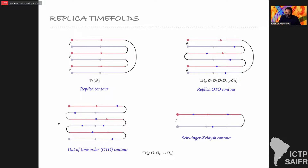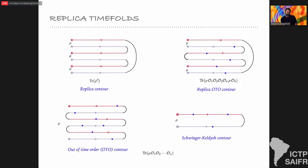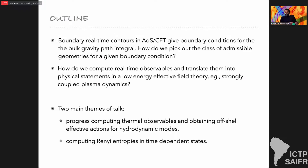Over the years we've come to appreciate that the world of contours we might want to draw in quantum systems is rich and diverse. We can have causal response contours like the Schwinger-Keldysh contour, or more general OTO contours, or we can draw replica contours and compute correlators — here there's a single density matrix, whereas in replica contours there are multiple density matrices. All of these are things we can study in quantum mechanical systems, and the question I want to ask is: given these contours in the boundary, what do I do in an ADS-CFT context?